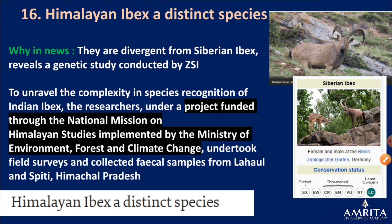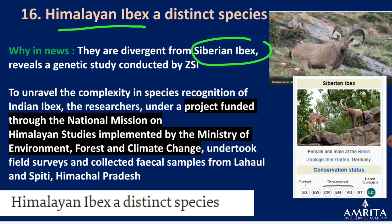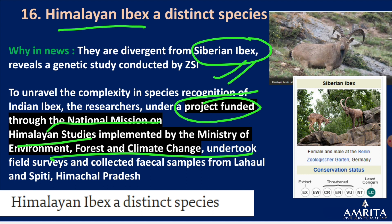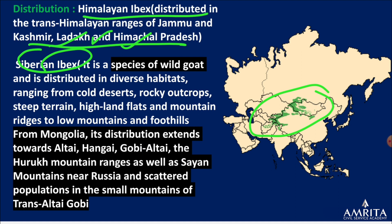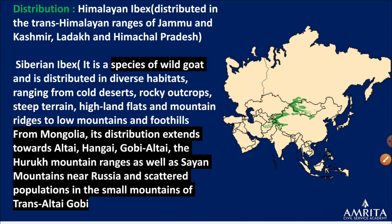Himalayan ibex — a distinct species from the Siberian ibex. Earlier they were thought to be the same species, but a project funded by the National Mission on Himalayan Studies by MoEFCC confirmed they are different species. Siberian ibex is least concern. Himalayan ibex is found in the Himalayan range — Kashmir, Ladakh, Himachal Pradesh. Siberian ibex is found from Mongolia across several mountain ranges.